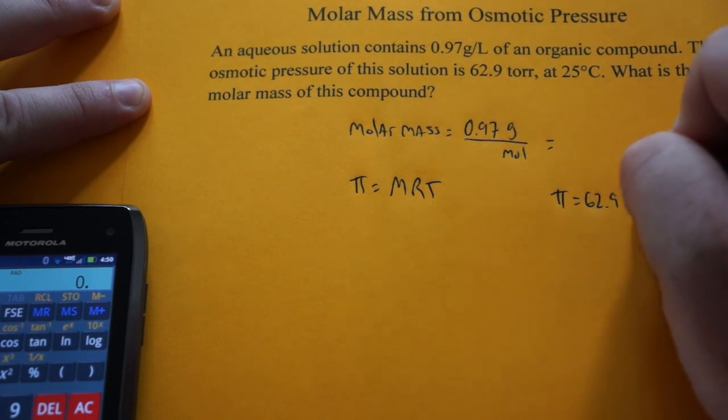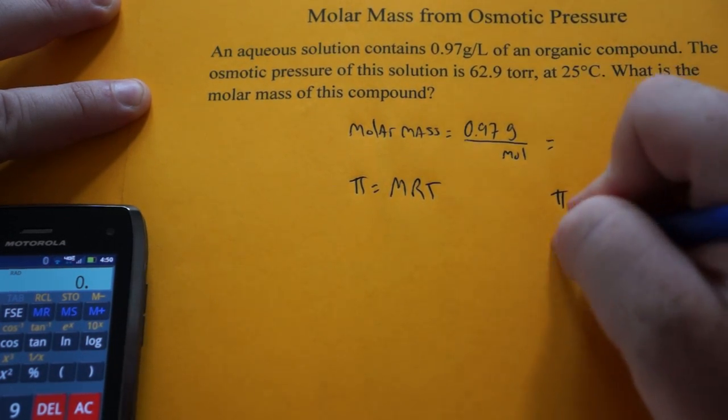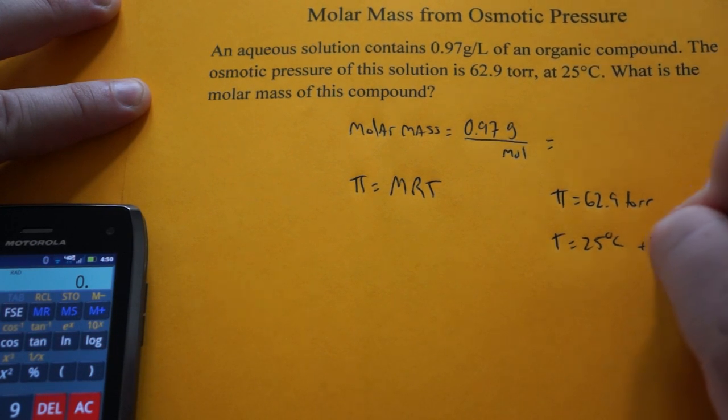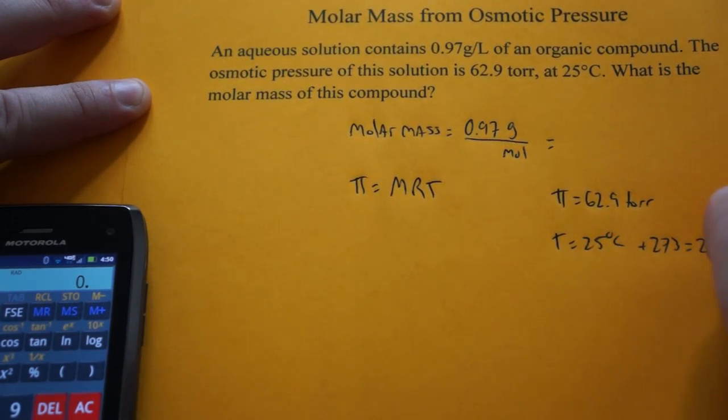62.9 Torr. And our temperature is 25 degrees Celsius. We need this in Kelvin, so 273, so that's 298 Kelvin.